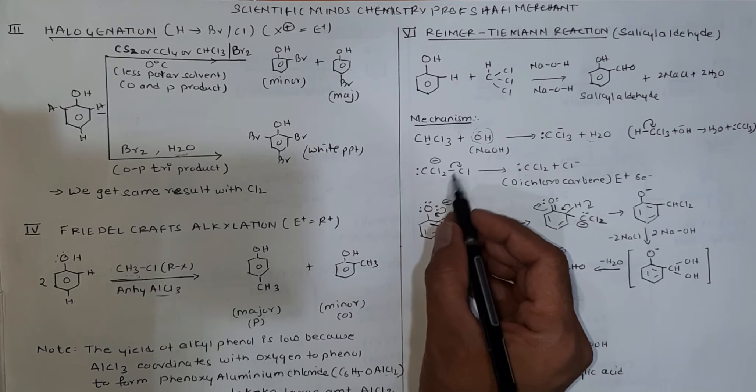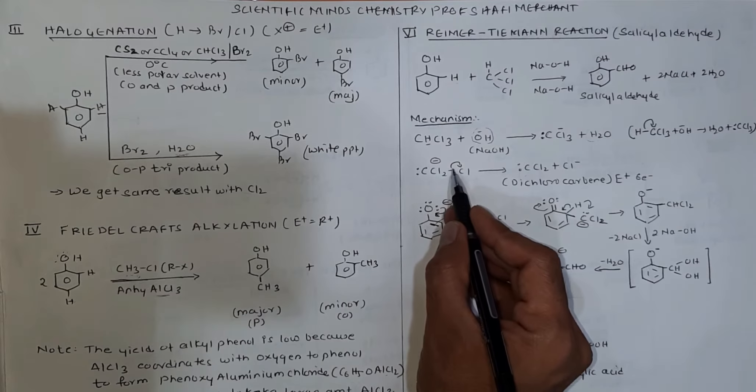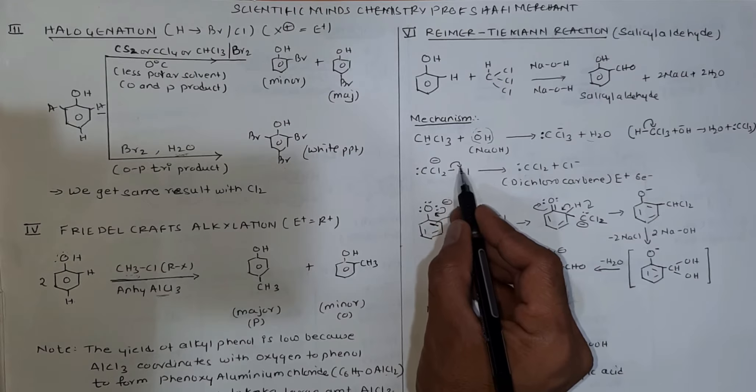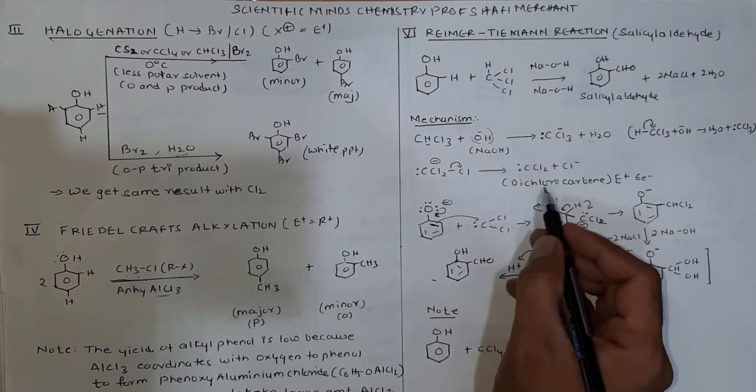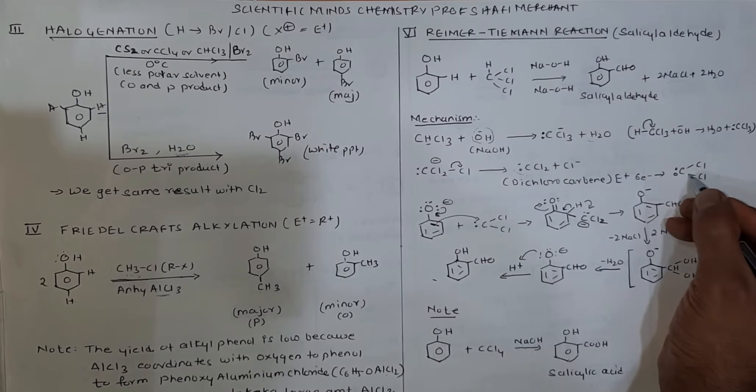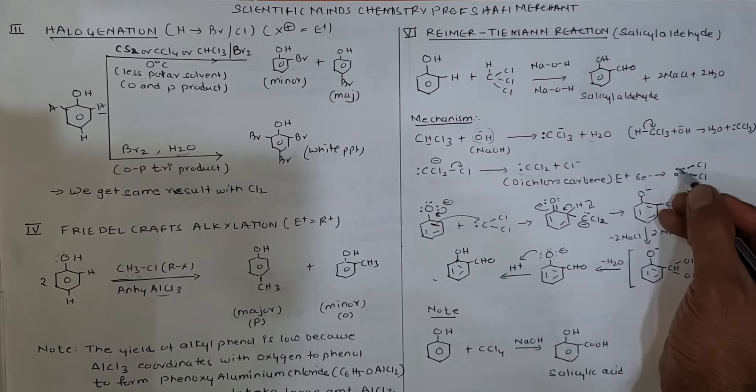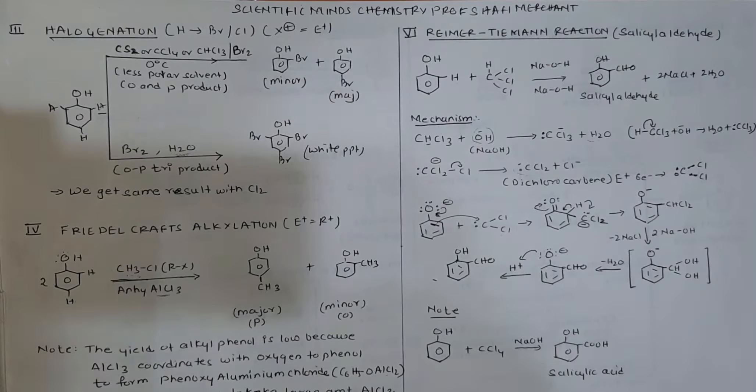This CCl3- undergoes dissociation where one chlorine takes away the entire electron pair to form chloride. What remains is dichlorocarbene, which has six electrons - two lone pairs on CL-C-CL. This is electron deficient, making it an electrophile.